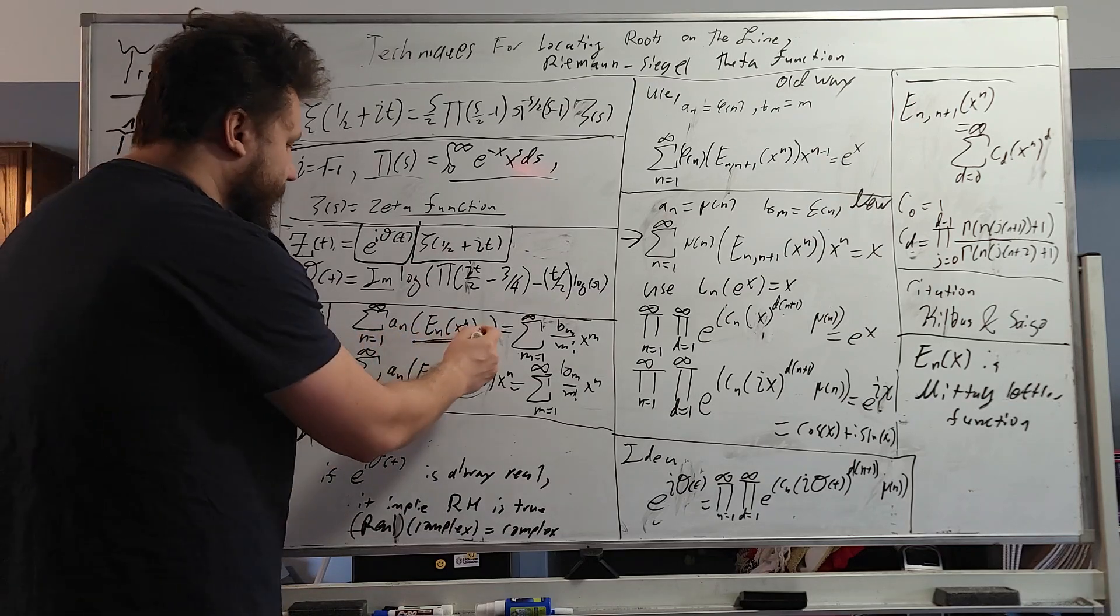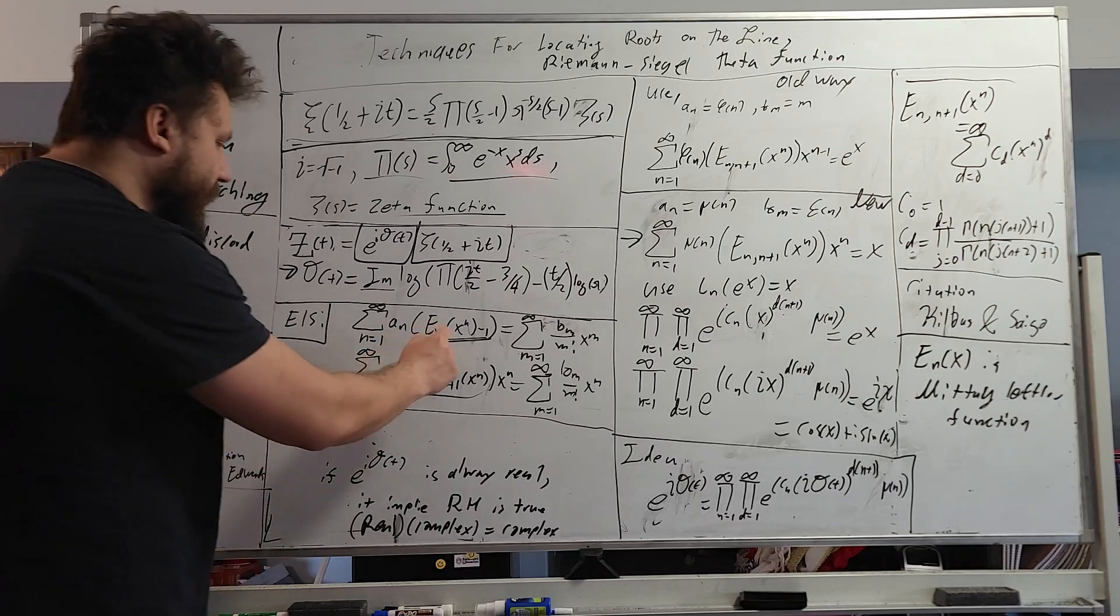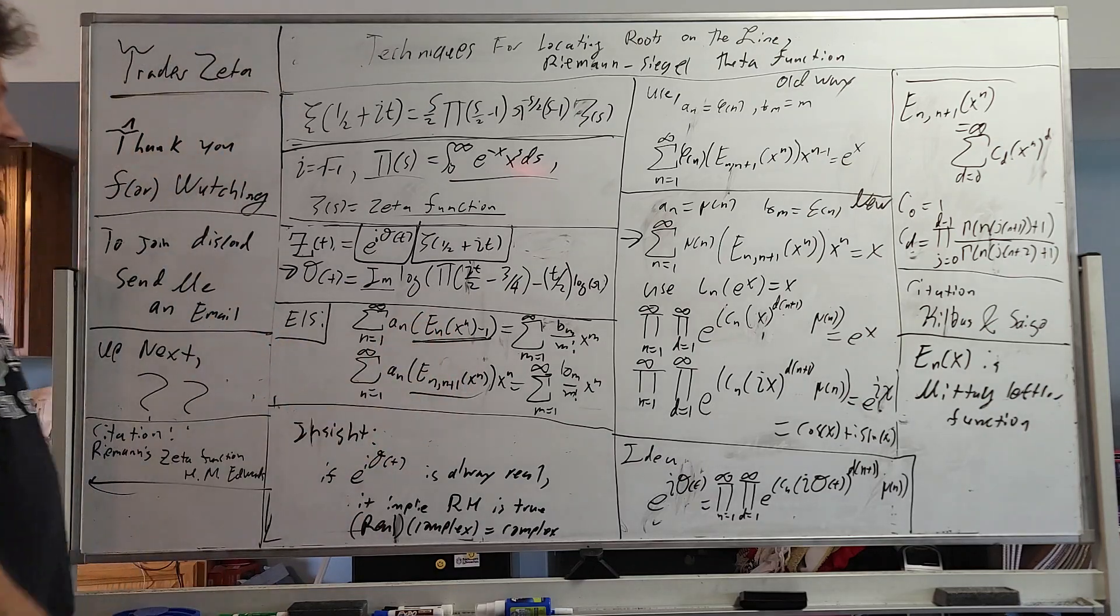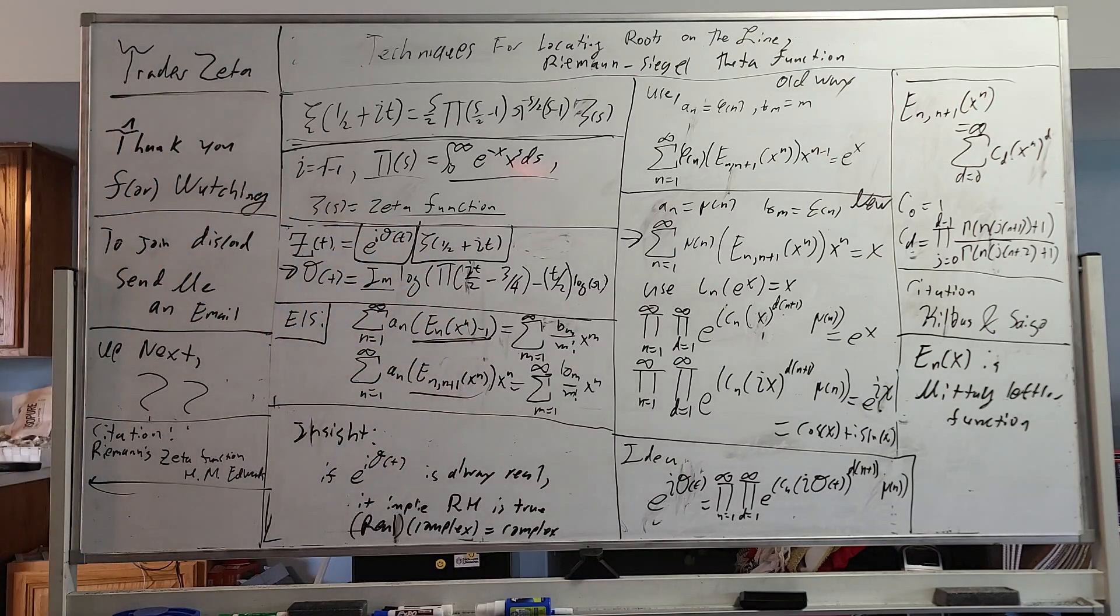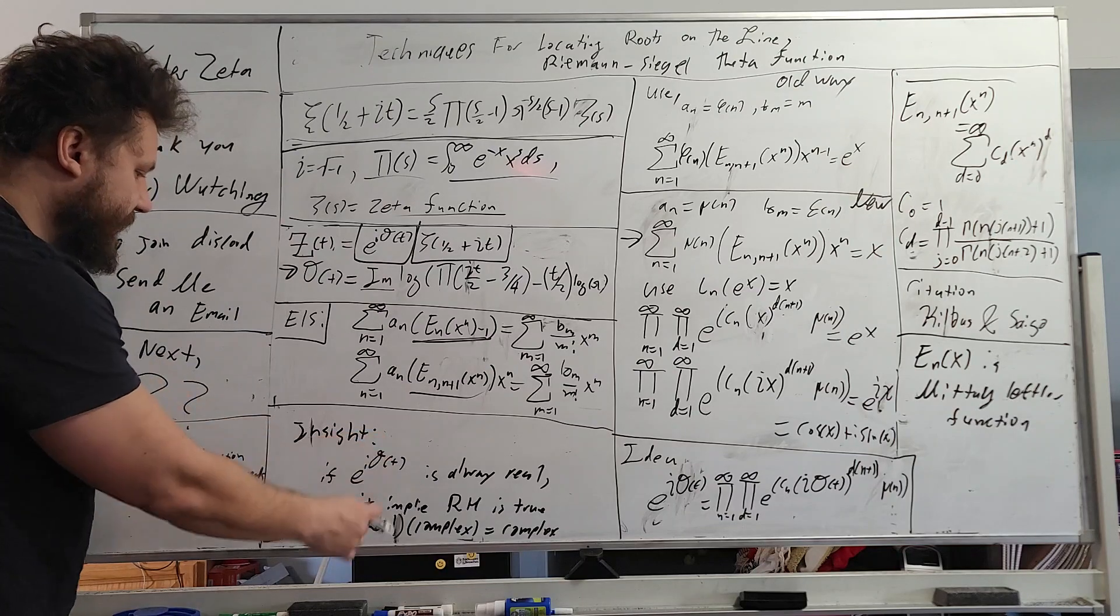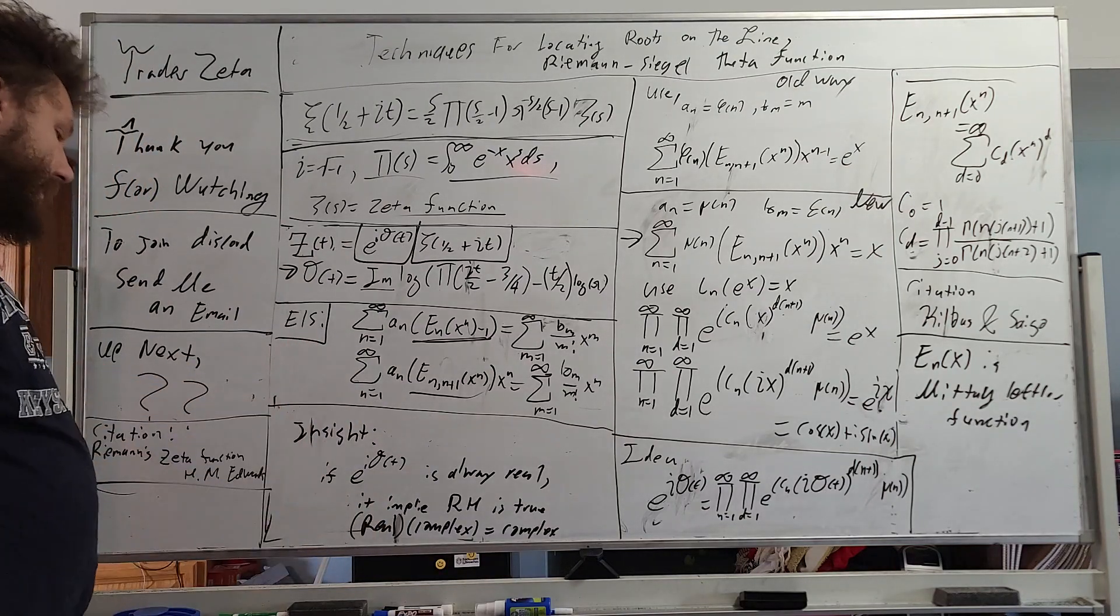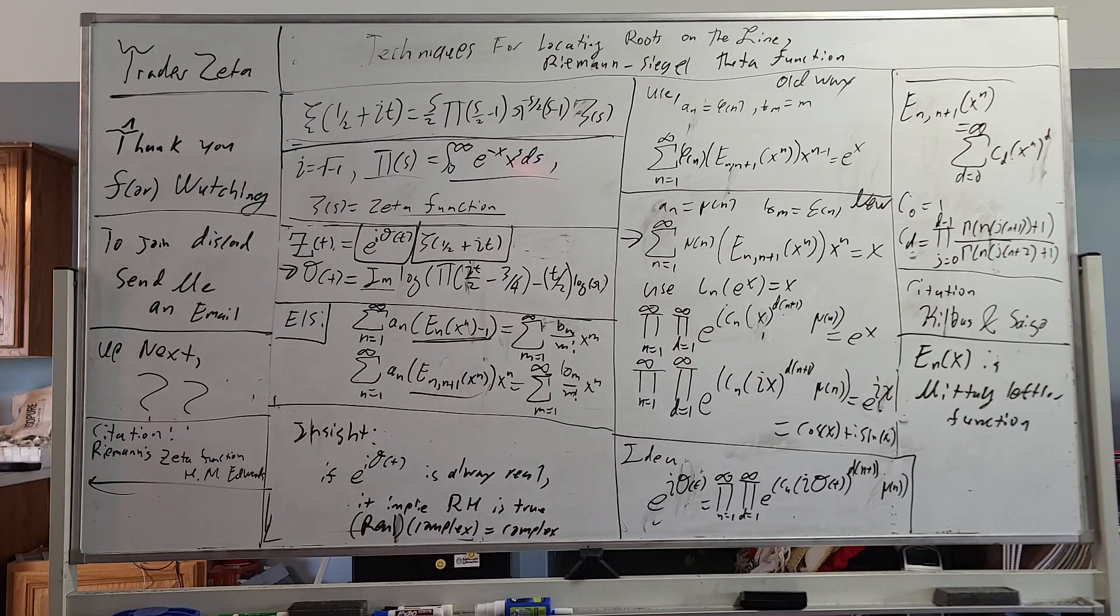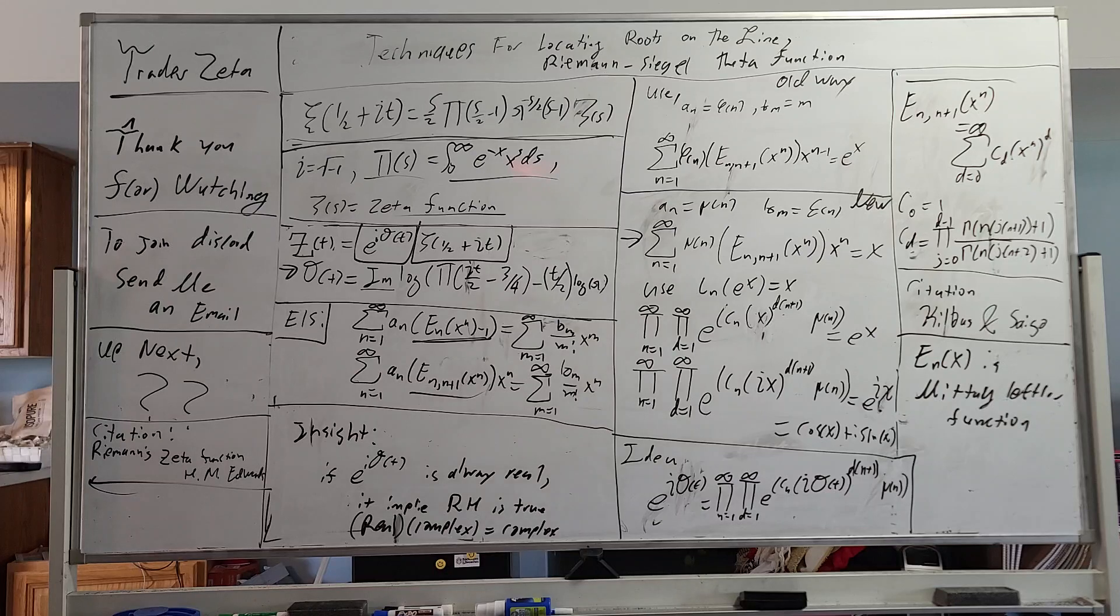Right here is the Mittag-Leffler function. So these two right here are just varying identities of the Mittag-Leffler function. You can work between these two, which is really nice. So the insight we talked about is E to the i theta t is always real. It implies the hypothesis is true. So a real times a complex equals complex.